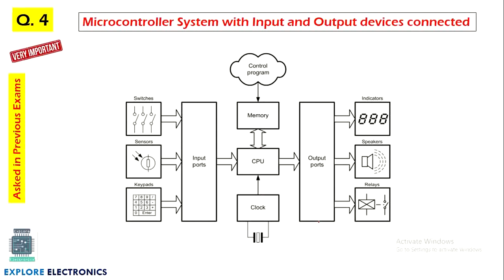Microcontroller system is one of the topics included in the syllabus. The CPU is a very important component, and memory also needs to be explained briefly. The CPU consists of an ALU along with input and output ports. Output devices include speaker, motor, relays, indicators, and displays; inputs may be switches, sensors, and keypads. The crystal oscillator, which we studied in the first chapter, is also shown here. This is an important concept for the exam.